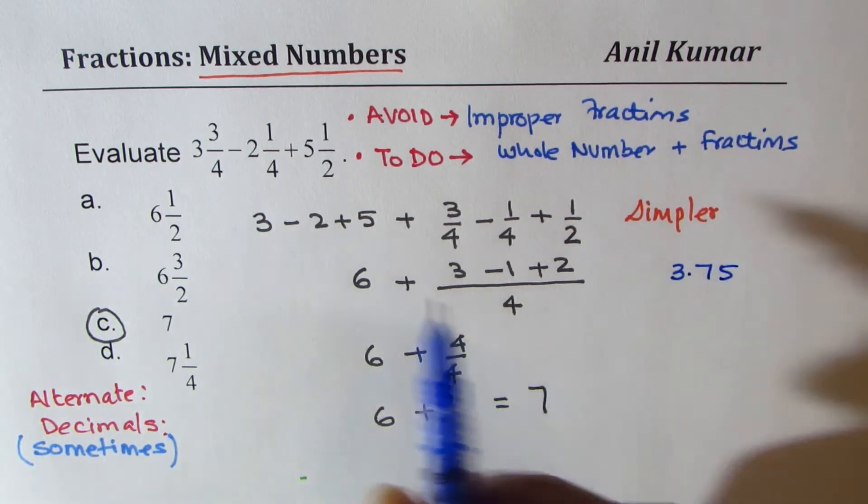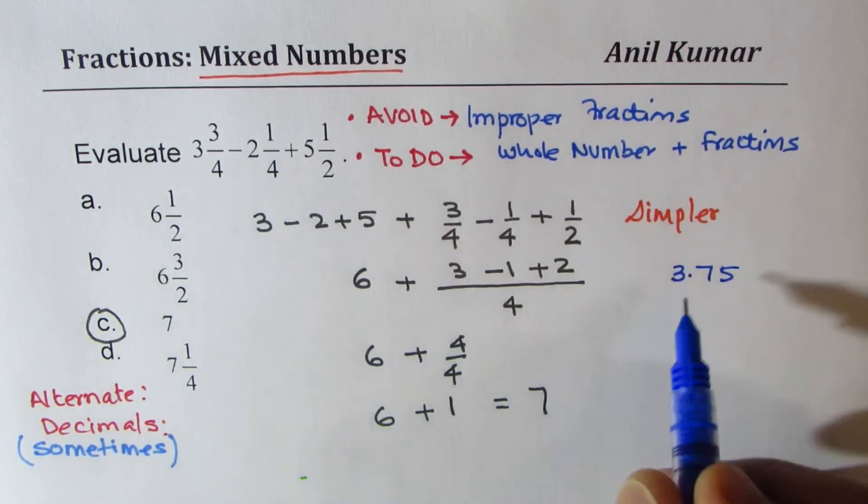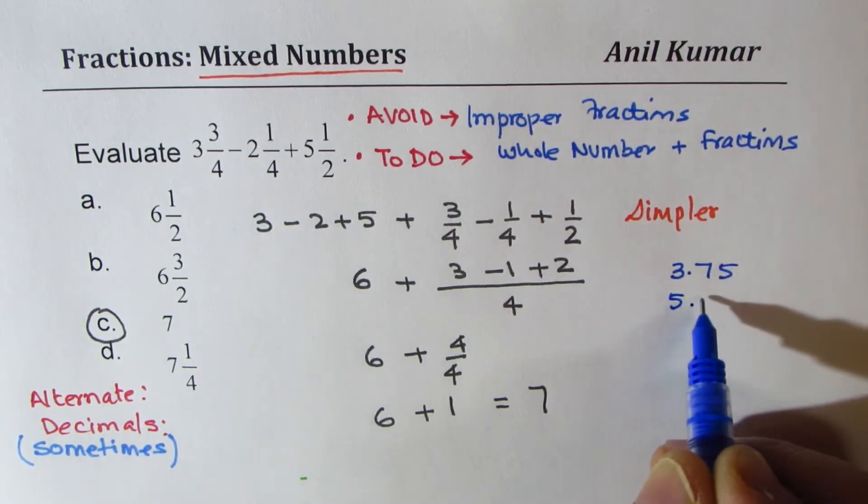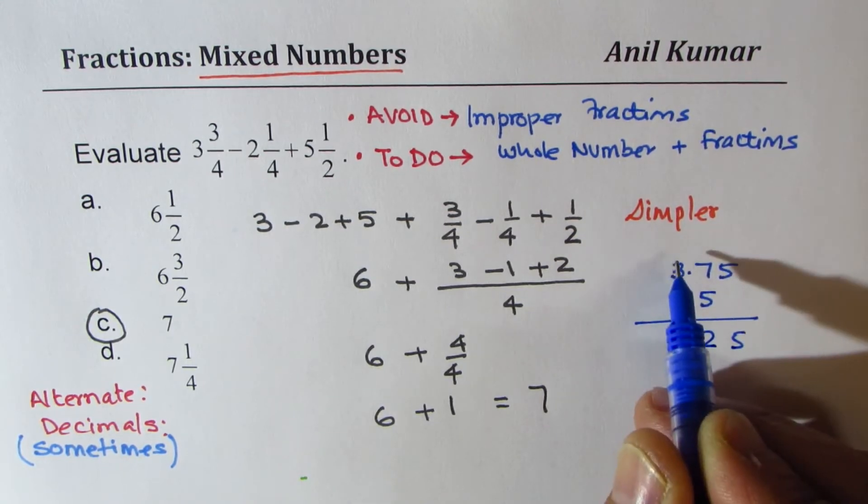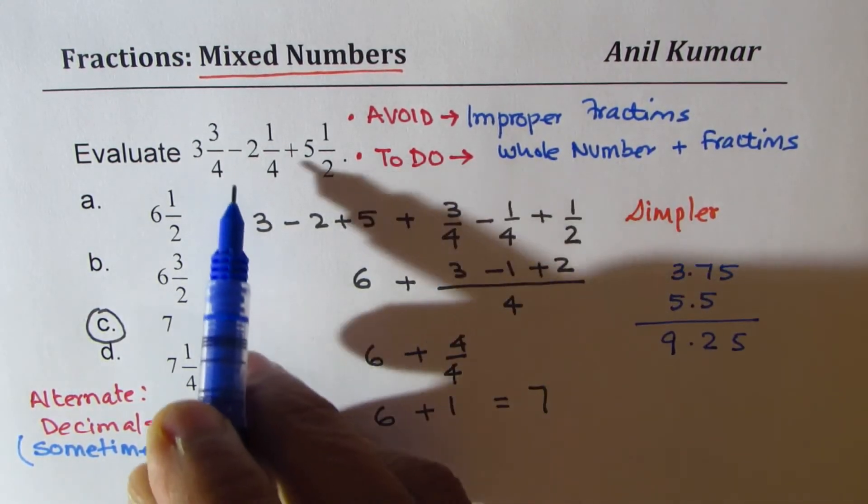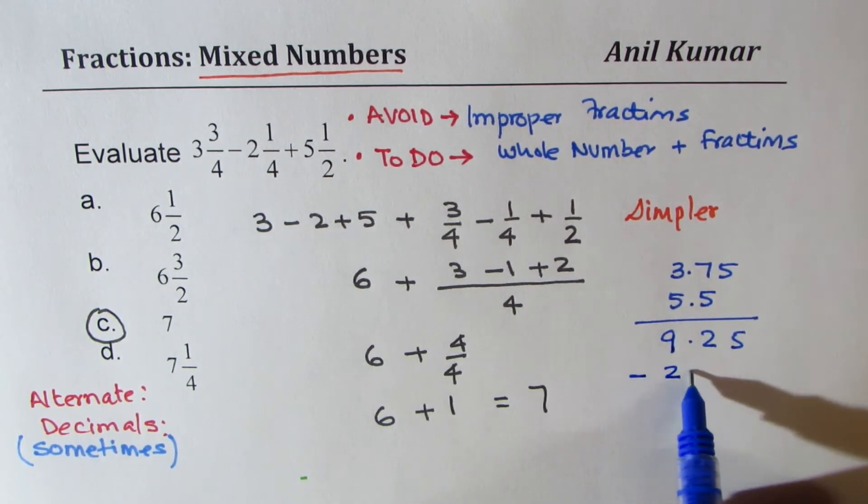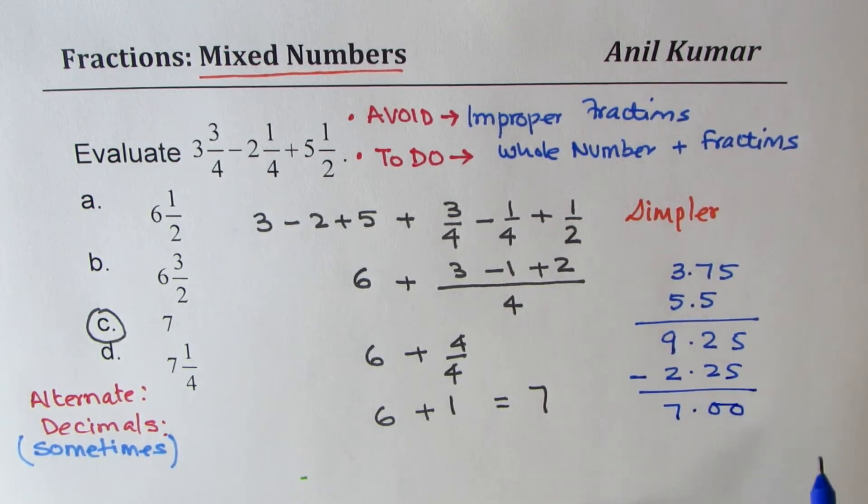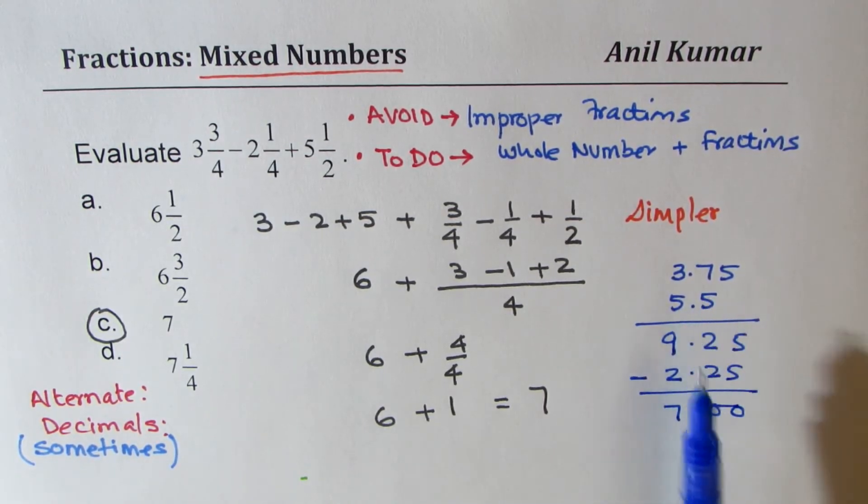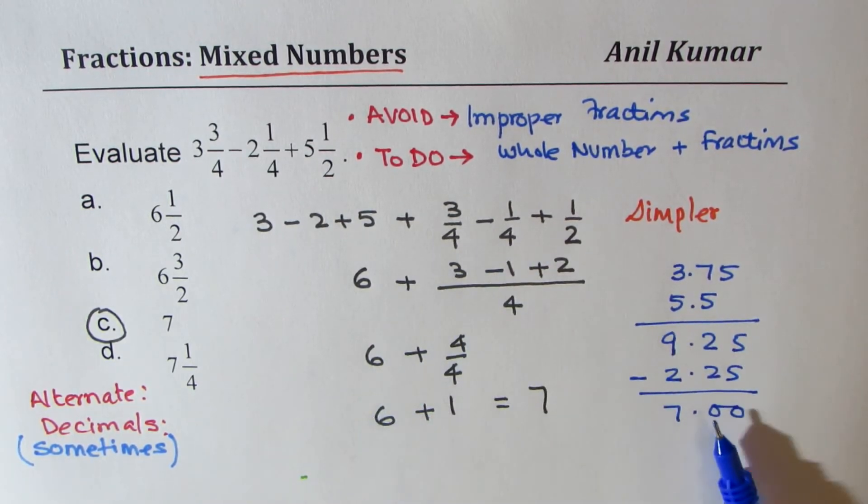3.75, and then we'll add 5.5, which is 9.25, and then we take away 2.25, and what you get here is 7.00. So this will take much lesser time in case you get this question in multiple choice questions. You don't have to show the method, then this is much faster.